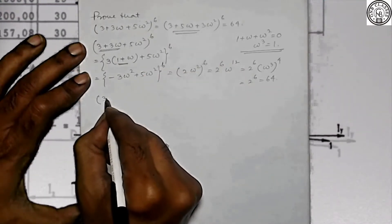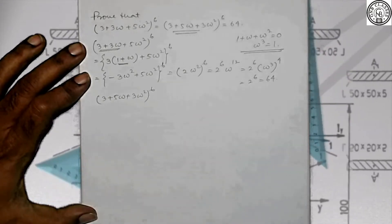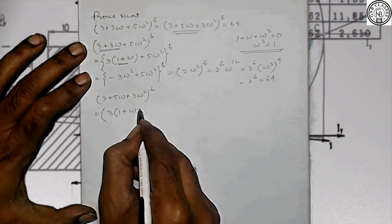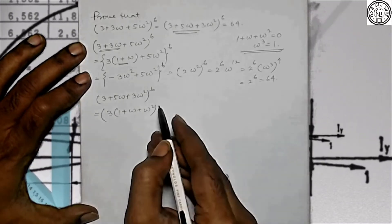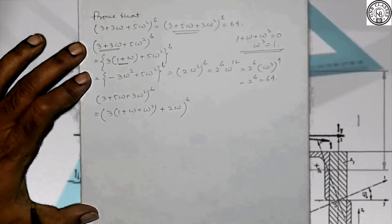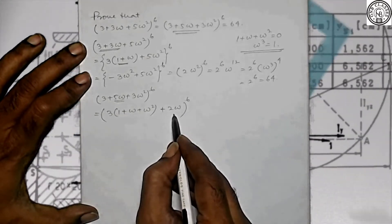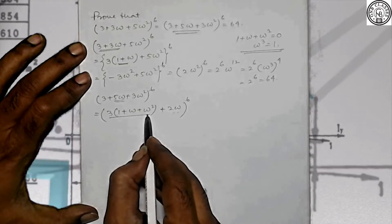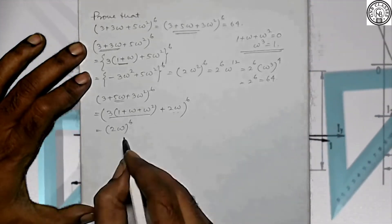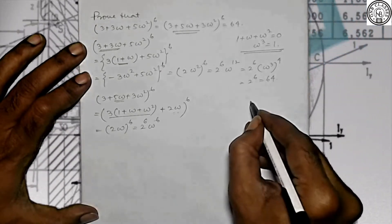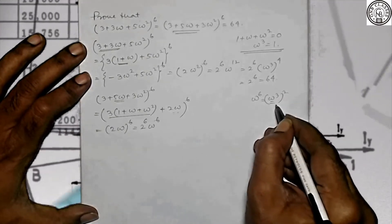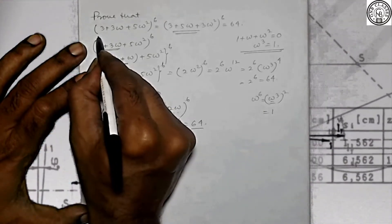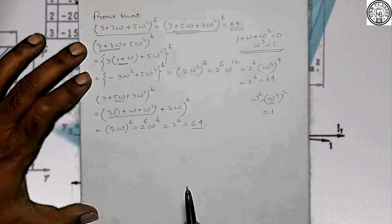For the second expression (3 + 5omega + 3omega²)⁶: rewrite 5omega as 3omega + 2omega, take 3 common giving 3(1 + omega + omega²) + 2omega = 2omega, since 1 + omega + omega² = 0. So this becomes (2omega)⁶ = 2⁶ × omega⁶ = 64 × (omega³)² = 64 × 1 = 64. Therefore both expressions equal 64. Proved.